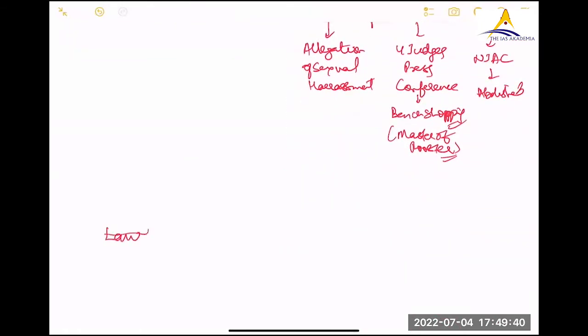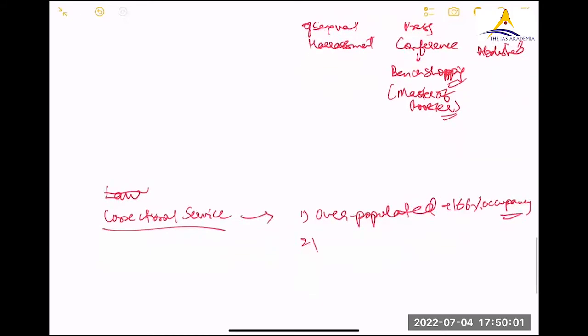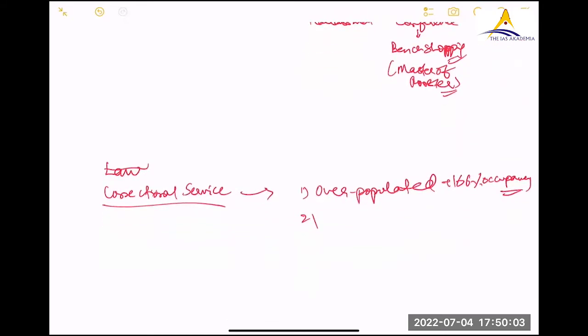Then correctional service or prison. What is the problem? There is 166% occupancy according to India justice report. You can mention according to India justice report. Most of them are under trials. There is a problem.